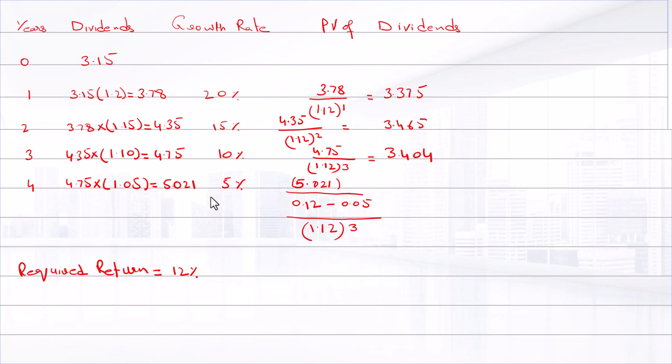So price is equal to 3.375 plus 3.465 plus 3.404 plus 51.05, that is equal to $61.30.